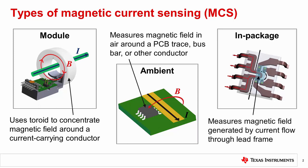Finally, the third type is in-package magnetic current sensing, which we will focus on today. In this technology, the current to be measured actually passes through the device package, and the magnetic field generated by the current flow through the lead frame is measured internally with an isolated sensor IC.